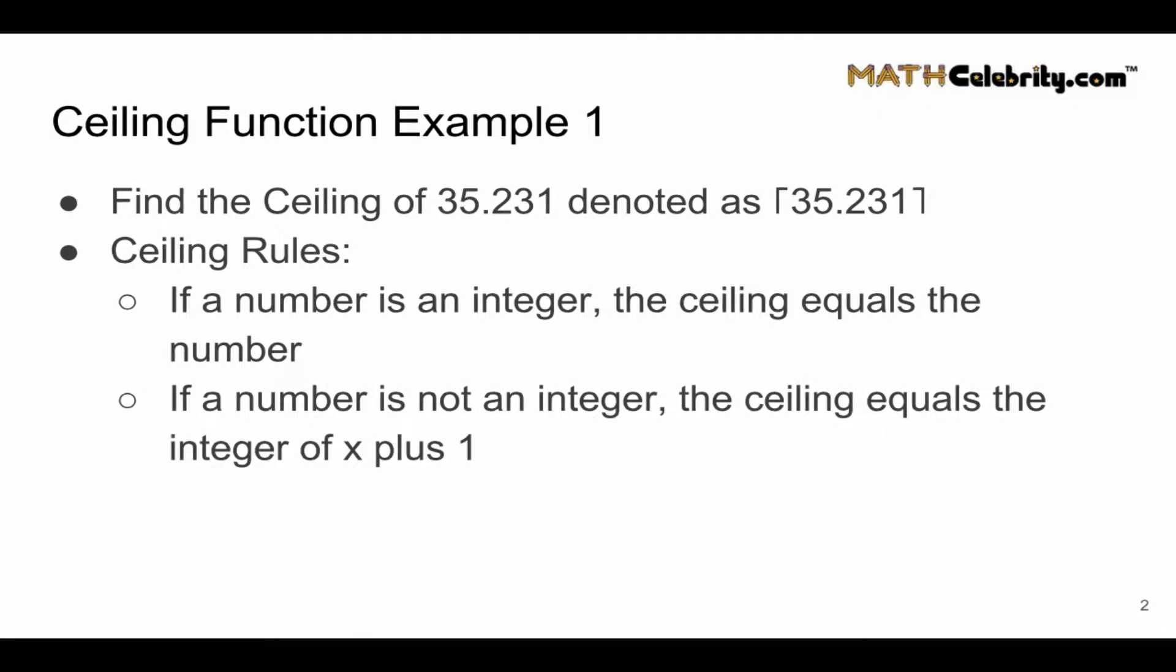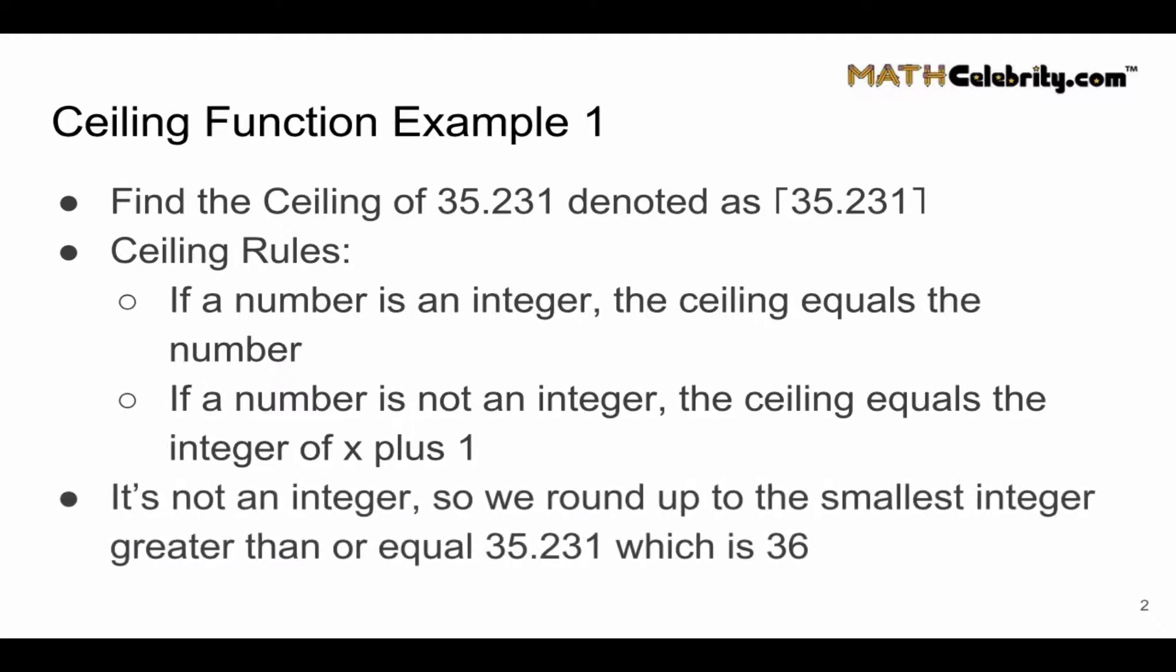If the number is not an integer, the ceiling equals the integer of x plus 1. Well, the integer of x is 35. Add 1 is 36. So the ceiling of 35.231 is 36.